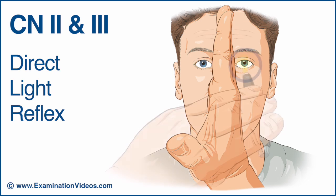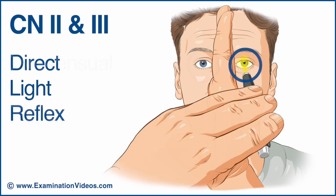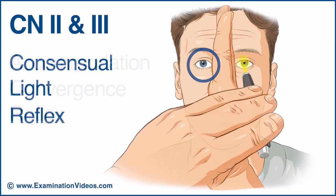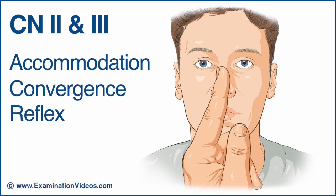Repeat the same procedures on the opposite side. To test for the accommodation convergence reflex, hold your finger approximately 6 inches in front of the patient's face. Ask the patient to look at the wall behind you and then to look at your finger.